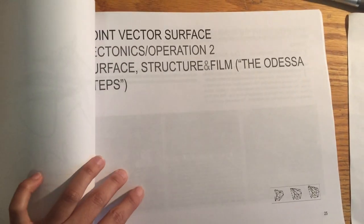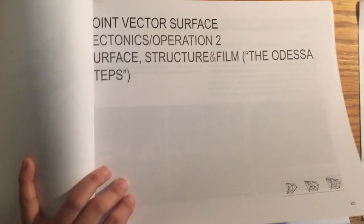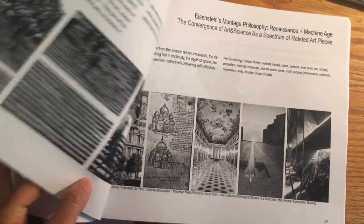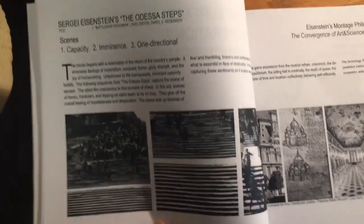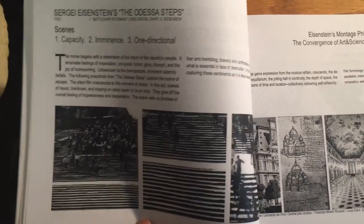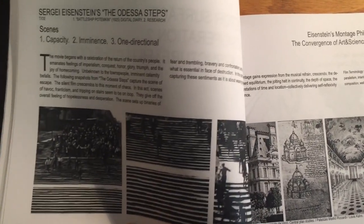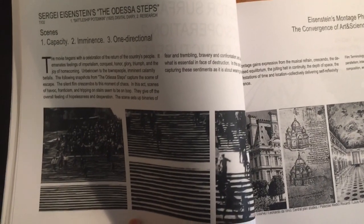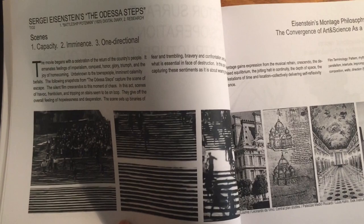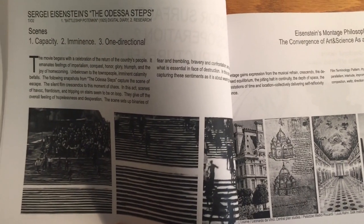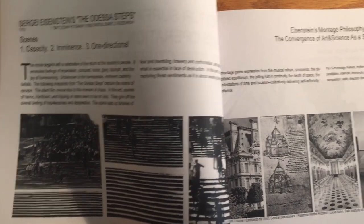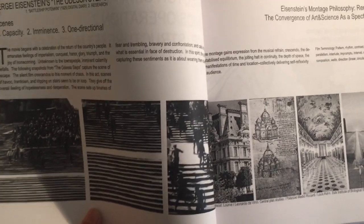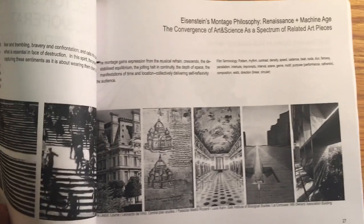Moving on to the next project, we have the point vector surface concept, and here I extracted the scene from the rush down the staircase. I was particularly interested in that because for me it implied the capacity of the staircase, the sense of imminent danger, and also the fact that people could only move in one direction — because moving back would be dangerous for their lives and nearly impossible because of the crowd.